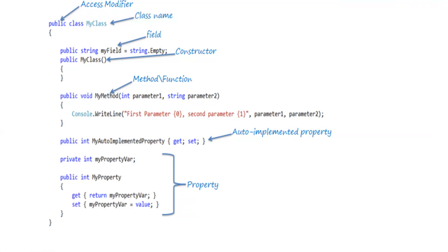If you look at the access specifiers — as I mentioned, these are the main areas which provide access to your class. If you don't declare an access specifier for a class, it will default to public. In C-Sharp we have different access specifiers: public, private, protected, and internal. Based on your requirement you can use them. We'll discuss more on access specifiers in the next class.